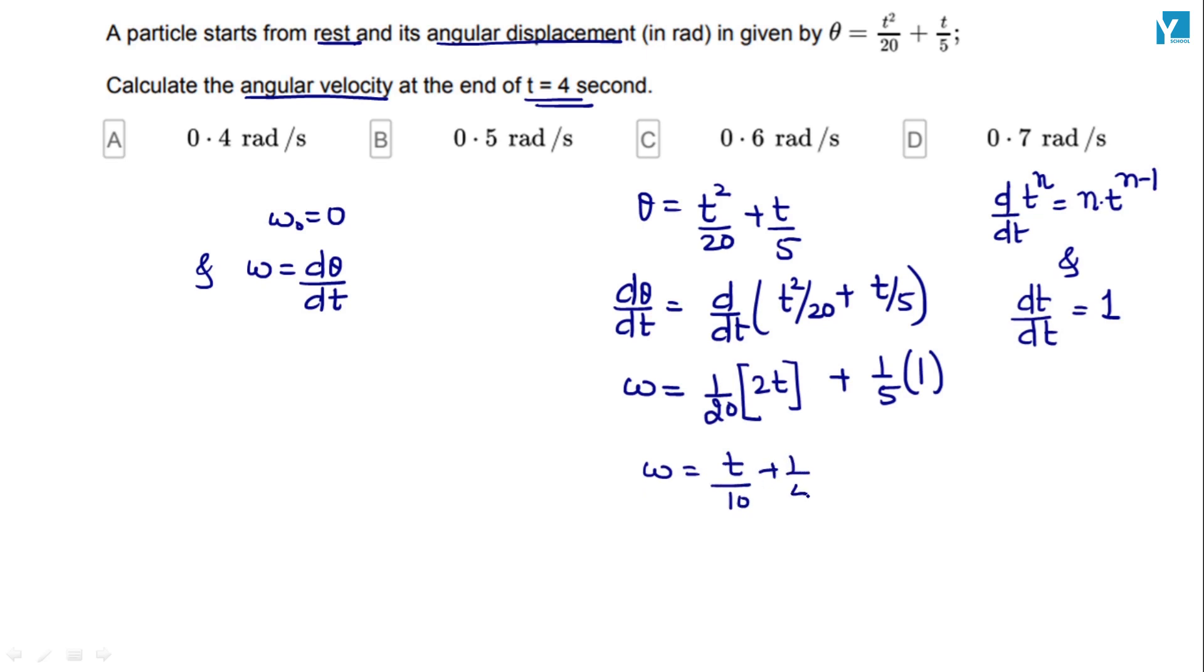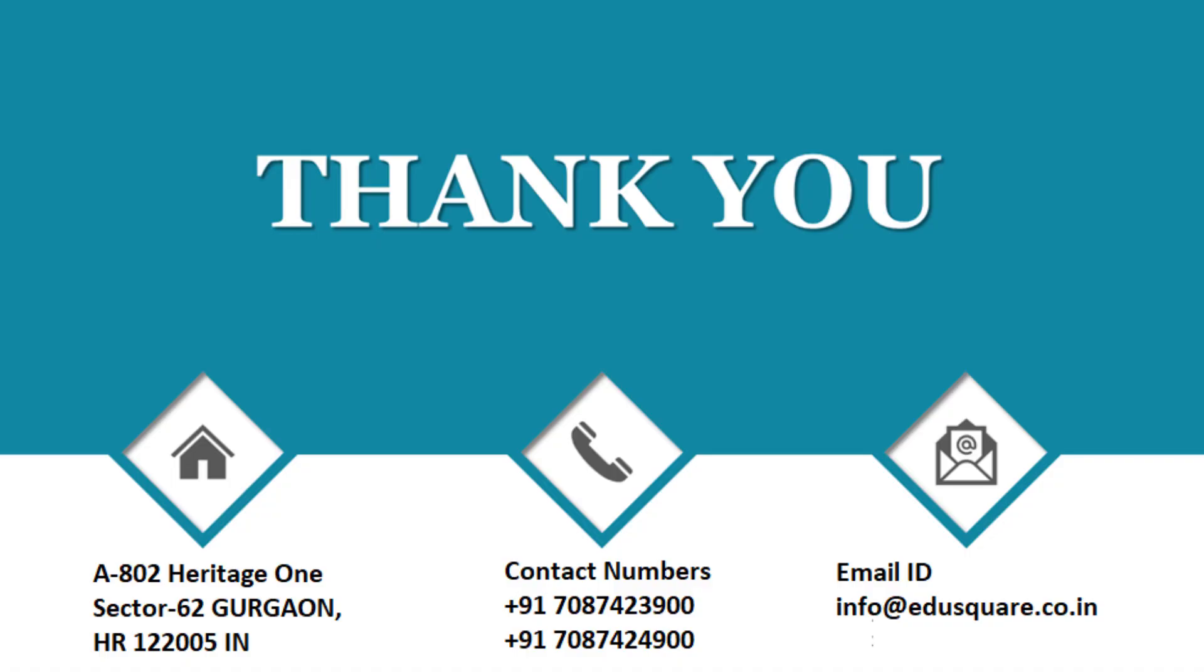On calculating we get t by 10 plus 1 by 5 equals omega. At t equals 4 seconds, we can write omega equals 4 by 10 plus 1 by 5, which means 0.4 plus 0.2. This comes out to 0.6 radian per second. Option C should be our required answer.